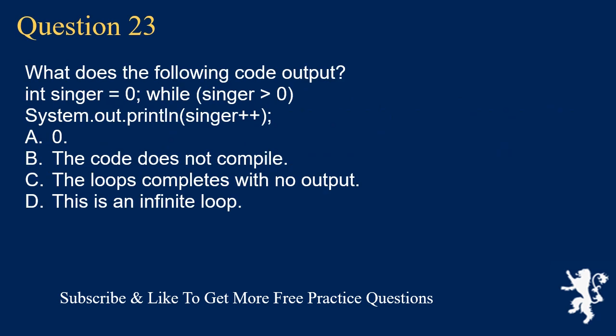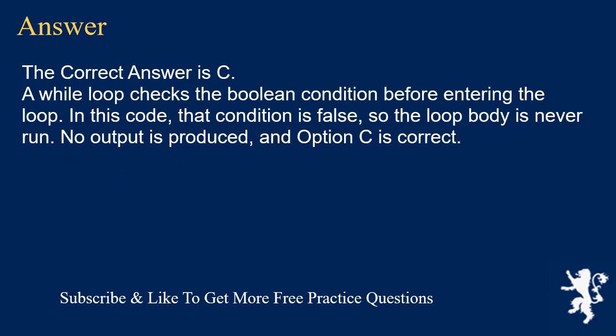Question 23. What is the following code output? int singer = 0; while (singer < 0) { System.out.println(singer++); } A. 0. B. The code does not compile. C. The loop completes with no output. D. This is an infinite loop. The correct answer is C. A while loop checks the boolean condition before entering the loop. In this code, that condition is false, so the loop body is never run. No output is produced, and option C is correct.